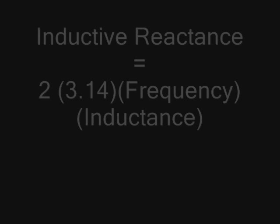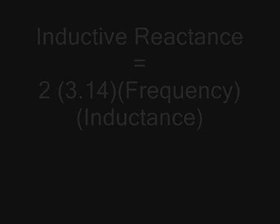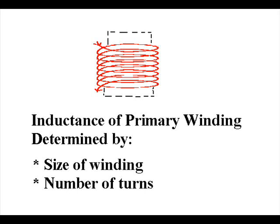Looking at the formula for inductive reactance, we can see that there are two ways to change the amount of reactance: either the frequency or the amount of inductance. Inductance is determined by the size of the primary winding and the number of turns in the winding. So one way of tuning a Tesla coil is by adding or removing turns — more turns means more inductance and fewer turns means less inductance.